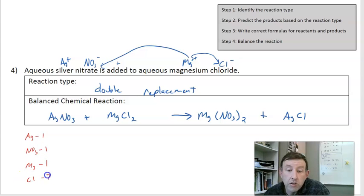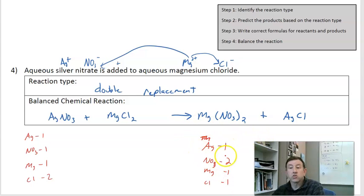One magnesium and two chlorines on this side. Over here on the right hand side, I've got one silver, two nitrates, one magnesium, and one chloride.